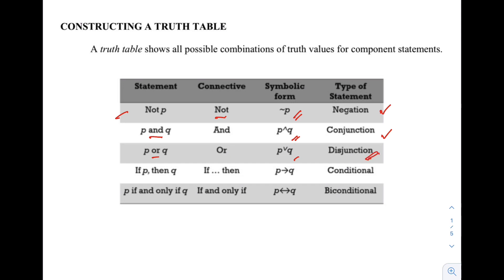For the 'if P, then Q' statement, the connective is the words 'if, then', and in symbol we use P → Q. This type of statement is called a conditional statement. For the statement 'P if and only if Q', the connective is the words 'if and only if', and in symbols we use the biconditional arrow (↔). This type of statement is called biconditional.